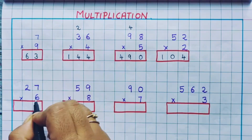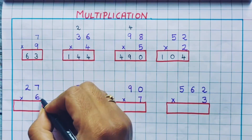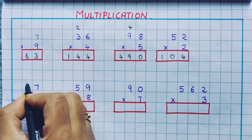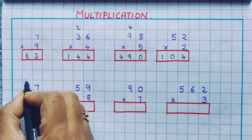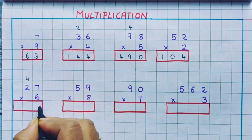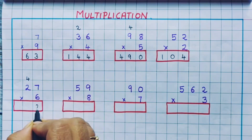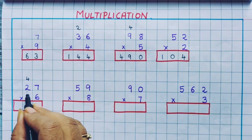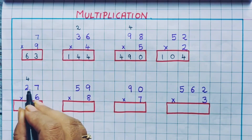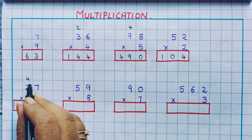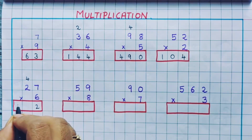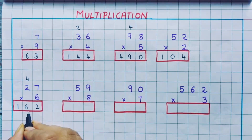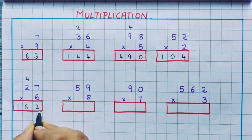Next: 27 into 6. 6 7s are 42, so we write 4 as a carryover and 2 here. Next, 6 2s are 12, and 12 plus 4 is 16. So we write 16 here, and the answer is 162.